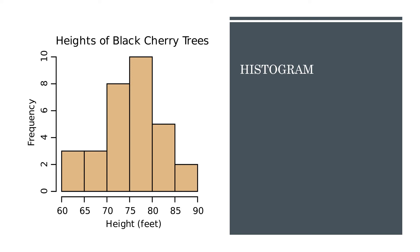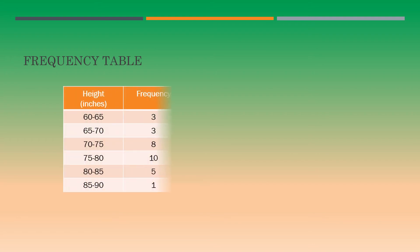We can relate this as a frequency table. The frequency table gives us details about the frequency. Between 60 to 65, there are three, 65 to 70, there are three, and 80 to 85, there are five.